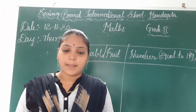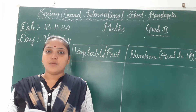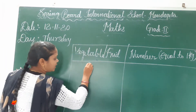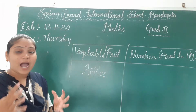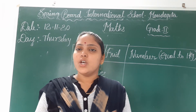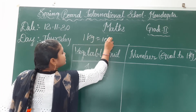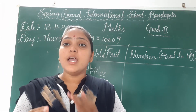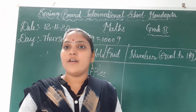Estimate the number of fruits or vegetables that would have the same mass as 1 kilogram. For example, take your favourite fruit — apple. You have to think how many apples make a mass of one kilogram. Remember, one kilogram is equal to one thousand grams.